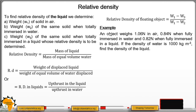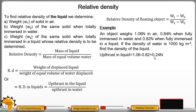Example: An object weighs 1.06 N in air, 0.84 N when fully immersed in water, and 0.82 N when fully immersed in a liquid. The density of water is 1000 kg/m³. Determine the density of the liquid. First, upthrust in liquid equals 1.06 minus 0.82 equals 0.24 N. Upthrust in water equals 1.06 minus 0.84 equals 0.22 N.